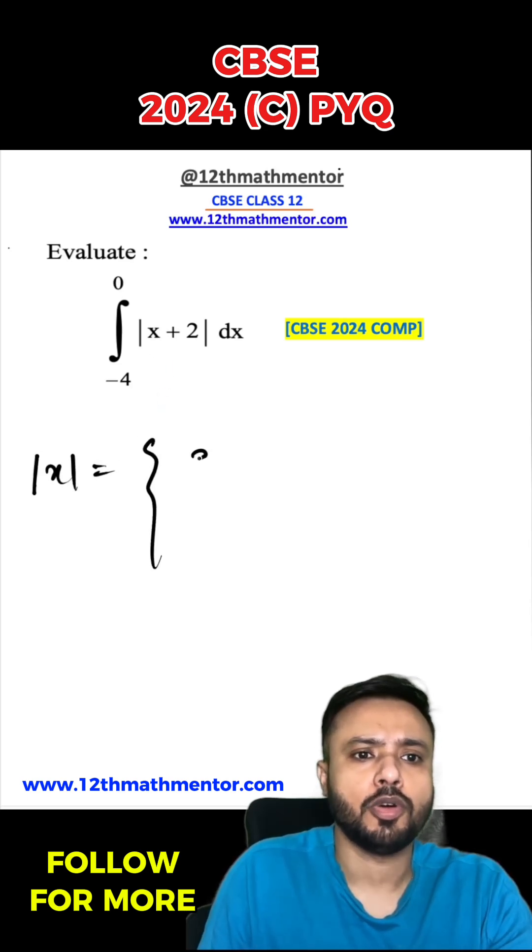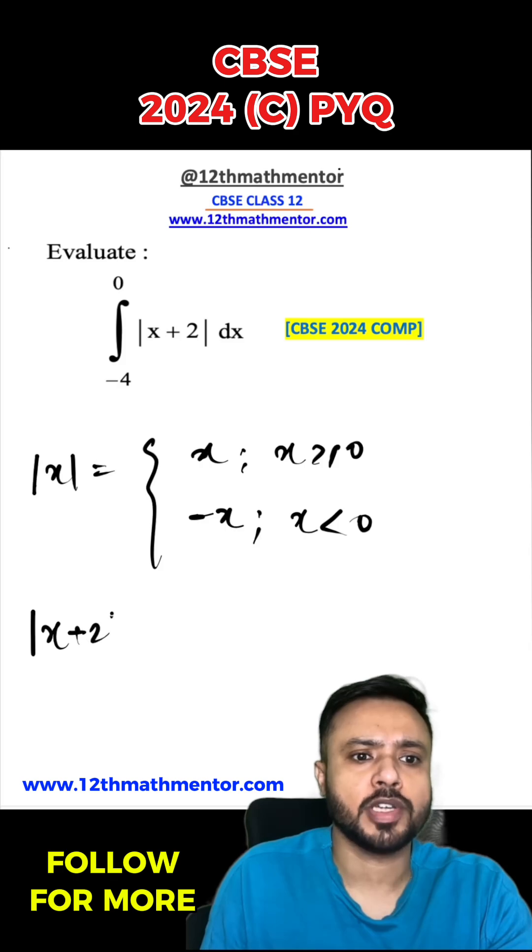Definition of mod is positive x when x is greater than or equal to 0, and negative x when x is less than 0. Now I will write out the definition of mod of x plus 2.